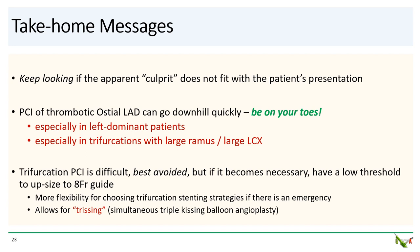Some take-home messages. First, as this case illustrates, keep looking if the first apparent culprit does not quite fit with the patient's clinical presentation. Next, respect the ostial LAD — PCI can go downhill quickly, especially in left-dominant patients or in trifurcations with large ramus and large circumflex. Be on your toes. Trifurcation PCI is difficult and is best avoided — it should still be the domain of surgeons. However, if it does become necessary, have a low threshold to upsize to a larger French guide. A larger guide will give you more flexibility for choosing trifurcation stenting strategies, especially in an emergency, and will also allow you to do simultaneous triple kissing balloon angioplasty, or trissing.